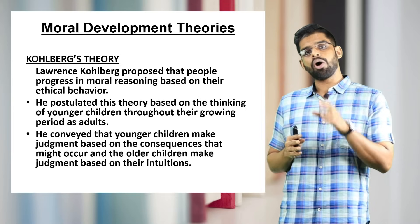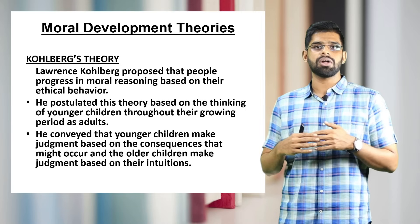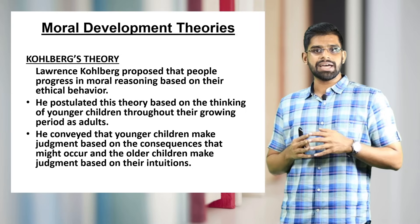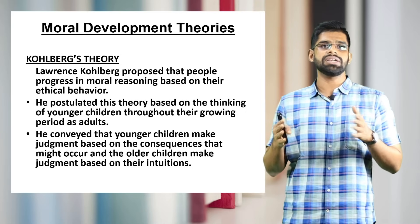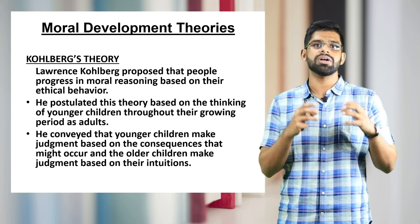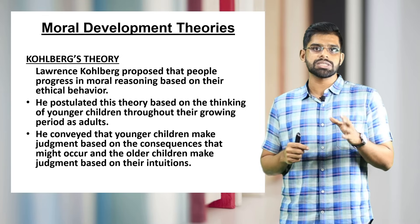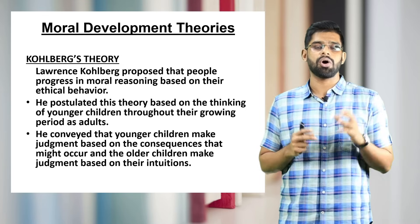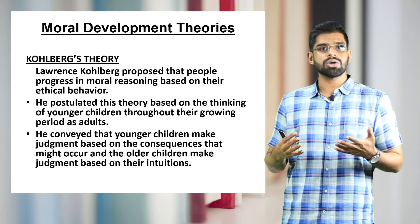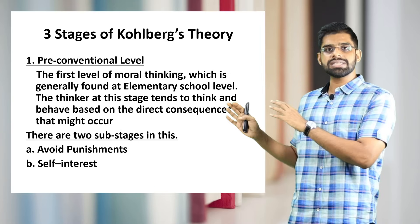In this theory, Lawrence focuses on how younger children and adolescents make decisions based on their situations. In younger stages of life, we make judgments based on the consequences of a particular decision. But when we grow older and more matured, we take decisions based on our intuitions. That is the main essence of this theory. He states that there are three stages, starting with stage one.